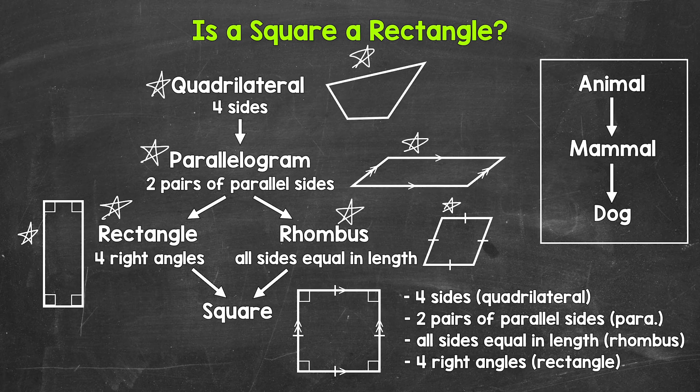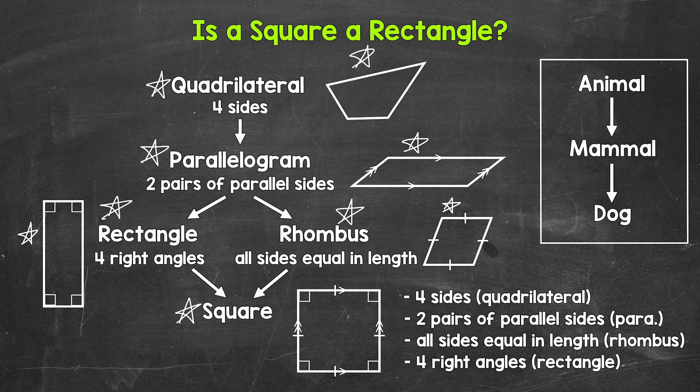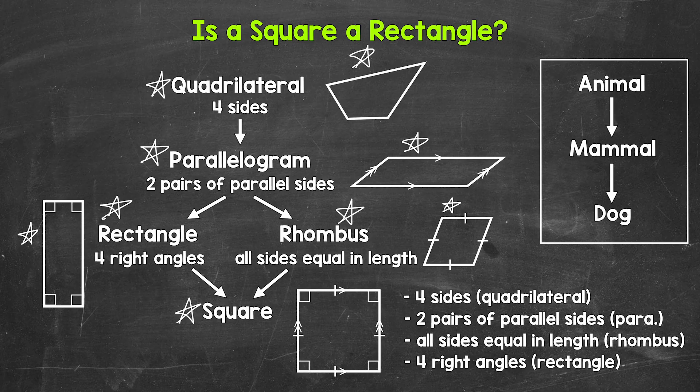Now working our way down from rectangle and rhombus, we finally get to square. A square is very specific. A square is a quadrilateral. Squares have four sides. A square is a parallelogram. A square has two pairs of parallel sides. A square is a rhombus. All four sides are equal in length. And finally, our main question, is a square a rectangle? Yes, a square is a rectangle.